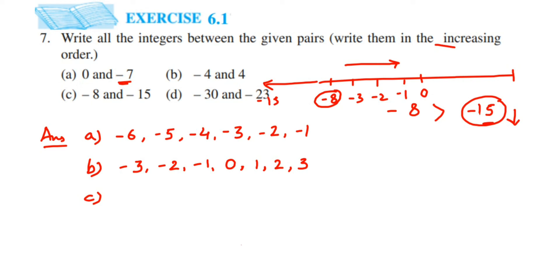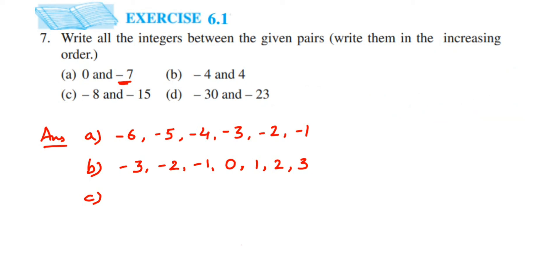So when writing the integers between minus 15 and minus 8 in increasing order, we start from minus 14 and go up to minus 9. Don't start from minus 8 since minus 8 is the greater end. So the answer is: minus 14, minus 13, minus 12, minus 11, minus 10, minus 9.